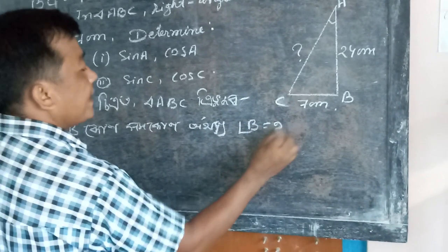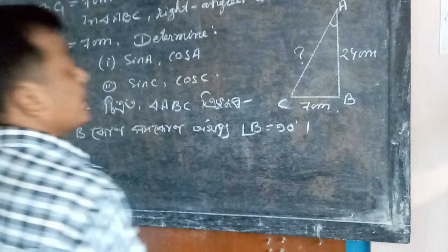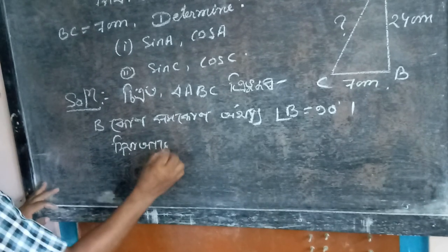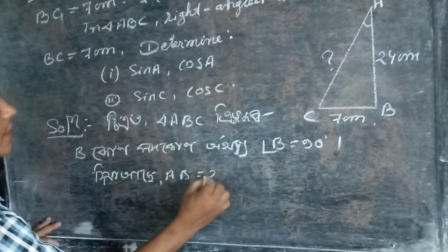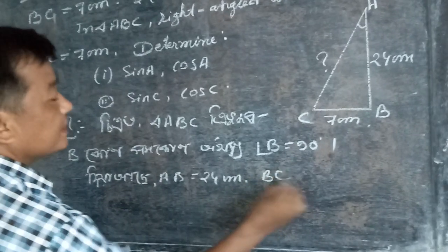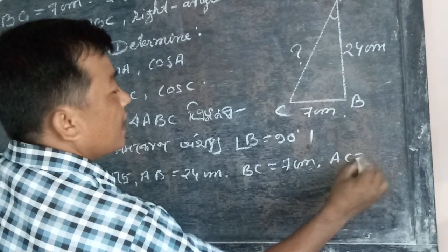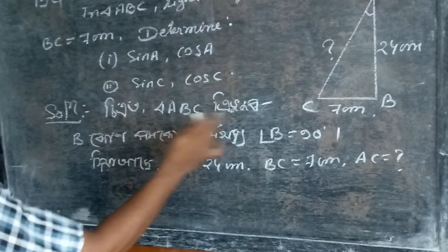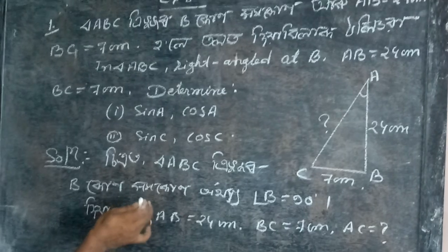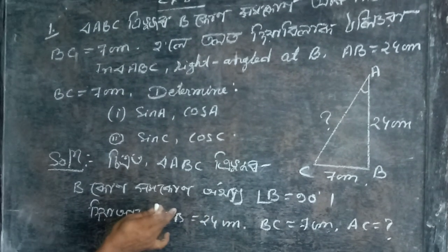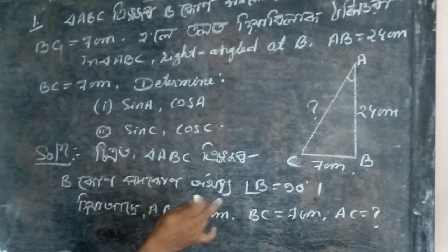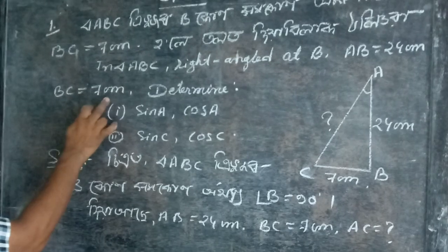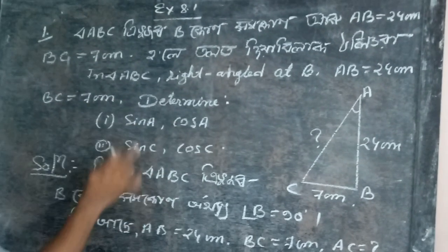In triangle ABC, angle B equal to 90 degrees. Given: AB measurement equal to 24 cm, BC measurement equal to 7 cm. Angle B is a right angle, that is angle B equal to 90 degree.